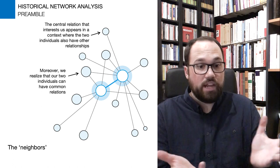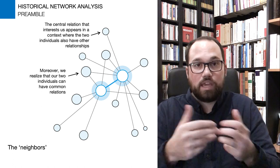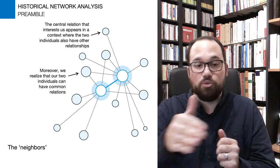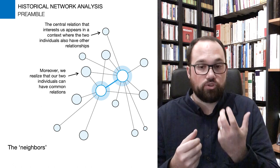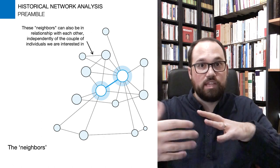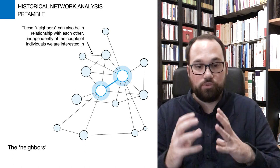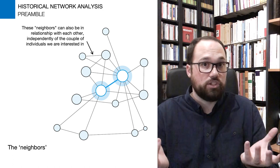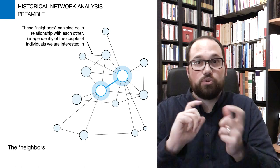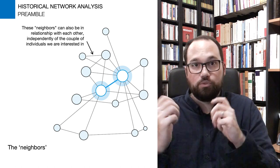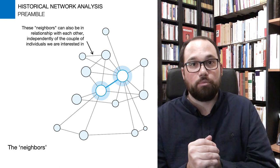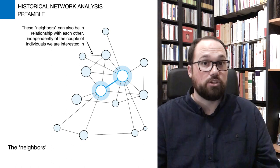Moreover, we will realize very soon that some individuals can be the bridges between our two main persons of interest. They could be linked to both of them, which will mean something structurally very interesting. These neighbors of our two persons could also have relations together — they can be linked to each other as well. Knowing that people who have written or received letters from our two individuals also exchange letters between themselves is something that will probably be very meaningful to contextualize that central relation.